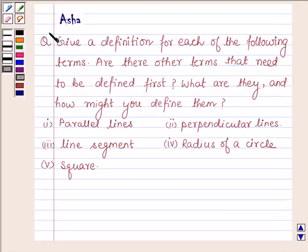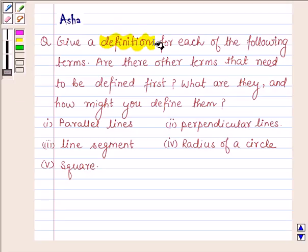Hello and welcome to the session. I'm Asha and I'm going to help you with the following question which says: give a definition for each of the following terms. Are there other terms that need to be defined first? What are they and how might you define them? First is parallel lines, second perpendicular lines, third line segment, fourth radius of a circle.